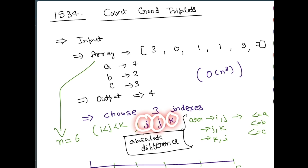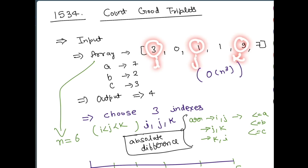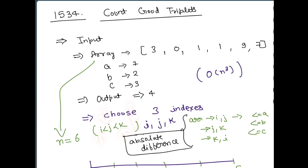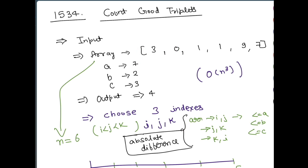You will choose three indexes — call them i, j, and k. The relationship is: i should be less than j and j should be less than k. So if you are choosing three numbers, say at positions 1, 2, and 3, the lowest index is i, the middle index is j, and the last index is k. For good triplets, the absolute difference between arr[i] and arr[j] has to be less than or equal to a, the absolute difference between arr[j] and arr[k] has to be less than or equal to b, and the absolute difference between arr[i] and arr[k] has to be less than or equal to c. The values a, b, and c are given in the question.